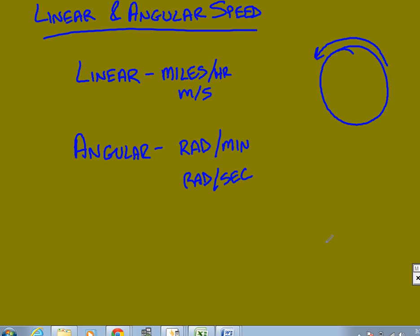Alright, what we're looking at today are linear and angular speed or velocity. Linear is what we've talked about before, just a straight line: miles per hour, meters per second, feet per decade, whatever you want to make it.